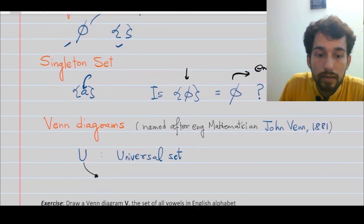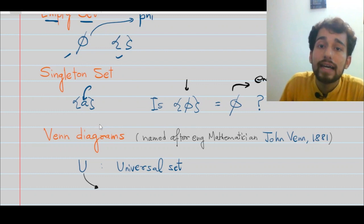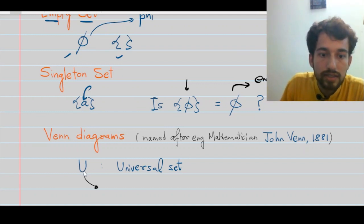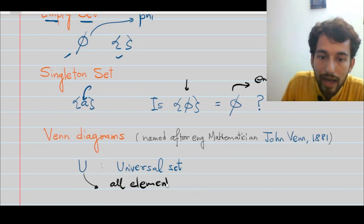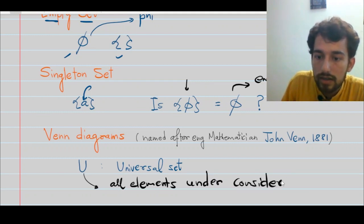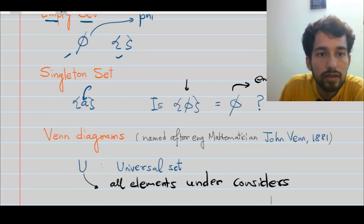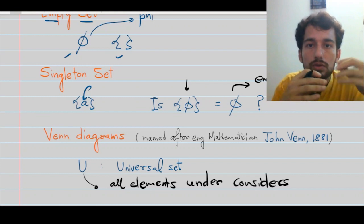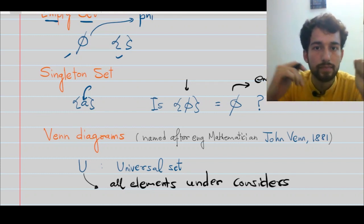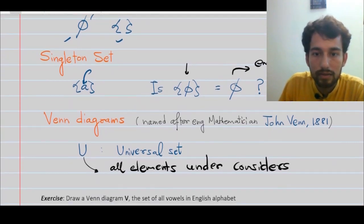This is a very important concept in set theory: Venn diagrams. The concept of Venn diagrams was given by English mathematician John Venn in 1881. The capital bold U denotes the universal set — it comprises all elements under consideration. For example, if I am talking about English alphabets, my universal set U is the set of all 26 English letters from A to Z. The set U may vary depending on the context.